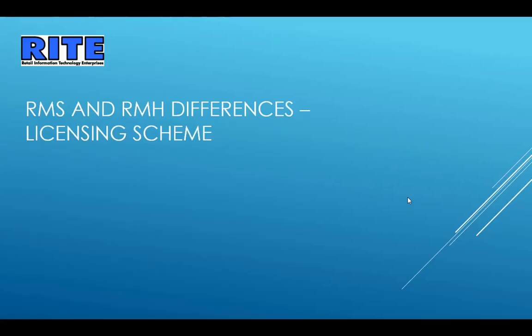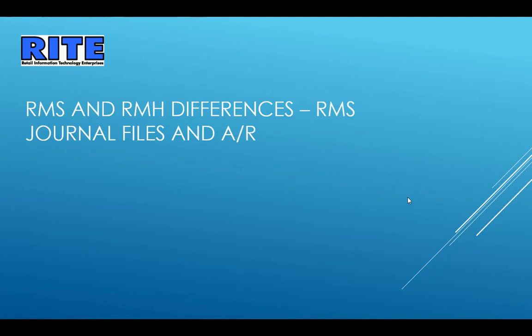Next up: journal files and accounts receivable. Please be prepared — if you are upgrading from RMS to RMH, you cannot open old RMS journal files or older accounts receivable activity in Retail Management Hero. We advise keeping one computer running RMS to use for any historical information. As time passes you'll use it less and less, but that is the easiest way to look up historical data specific to journal files and accounts receivable.